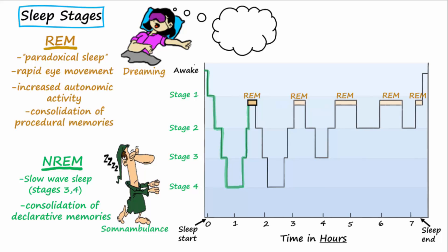Through the night, the sleeping individual alternates between REM and non-REM stages, with progressively longer REM stages and less deep, slow-wave, non-REM sleep occurring later in the night.